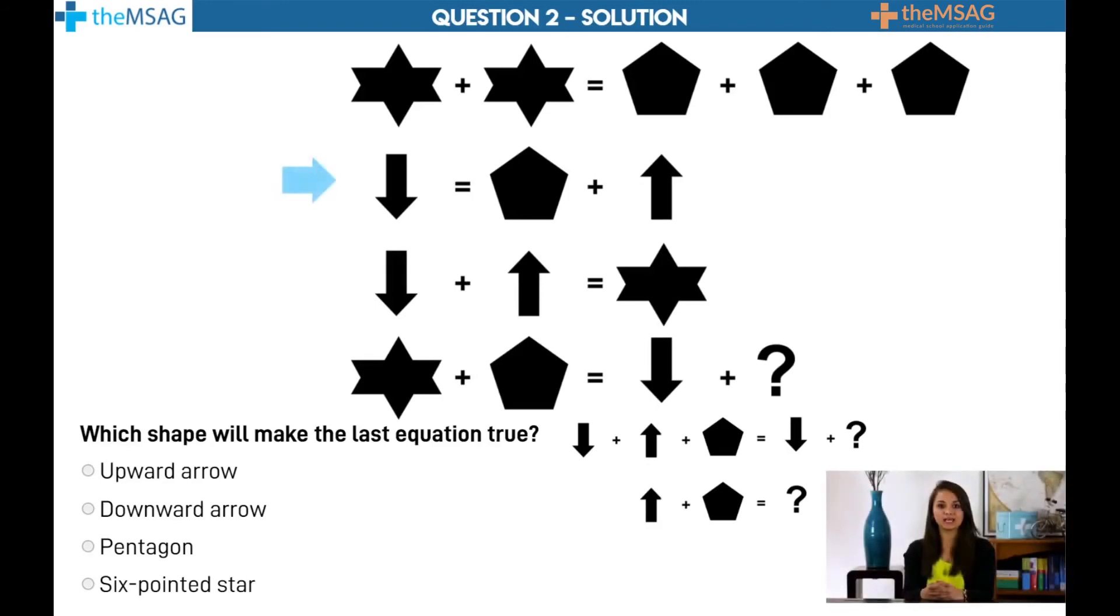But the second equation tells us this directly. Upward arrow plus pentagon equals downward arrow. Again, we've approached this tricky question with simple substitutions until we reach the correct answer.